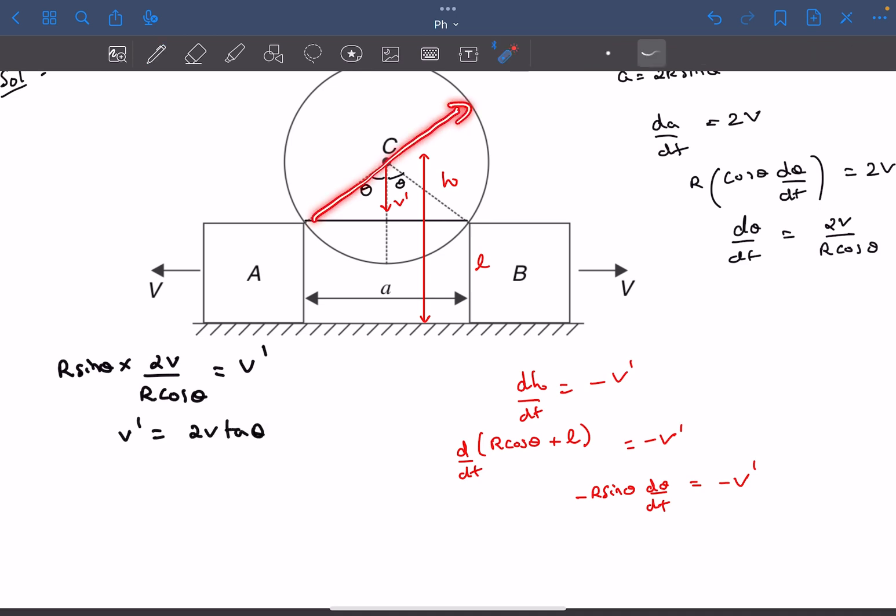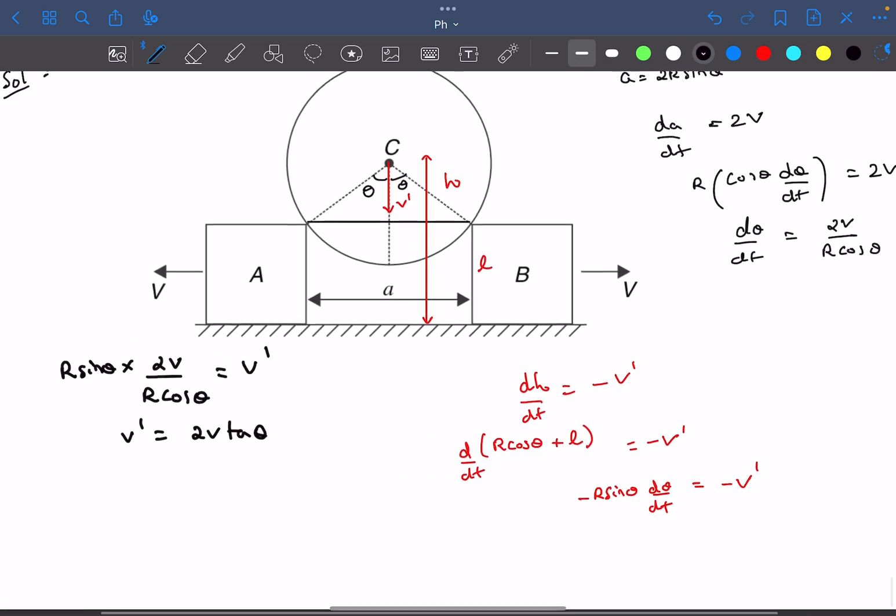Why can't we just write the normal reaction and equate it to Mg? Because there is some acceleration of this sphere in the vertical direction. If you try to differentiate, dV dash by dt is not 0, which means there is some acceleration of the sphere. Therefore we cannot balance the forces. We cannot write 2N cos theta equals Mg, which would be wrong.